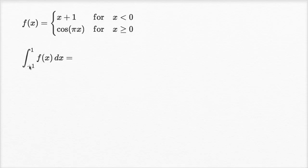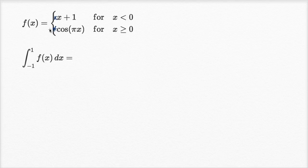We want to evaluate the definite integral from negative one to one of f of x dx. You might immediately say, which of these versions of f of x am I going to take the antiderivative from? Because from negative one to zero I would think about x plus one, but from zero to one I would think about cosine pi x. And if you were thinking that, you're thinking in the right direction. The way we can make this more straightforward is to actually split up this definite integral.